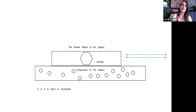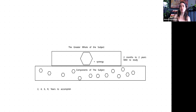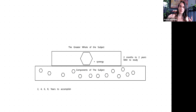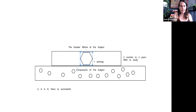Every subject has the greater whole. If you don't know the greater whole, you have to go through each and every component to communicate what the subject is about — spending two years on each. Or you can just study this one giant synergy and you're done. I figured this formula out when I was about 15, then studied it in everything, which is why I can get through a subject like that.